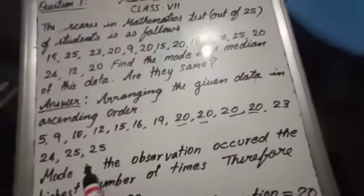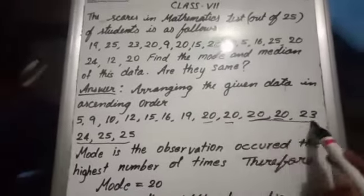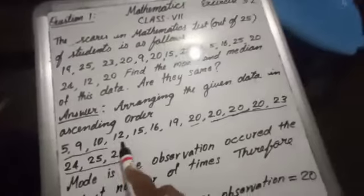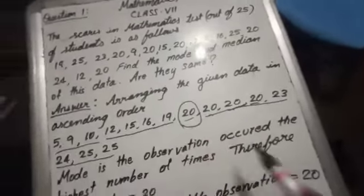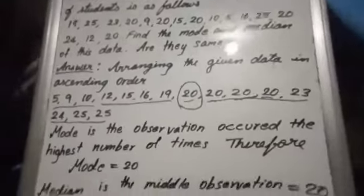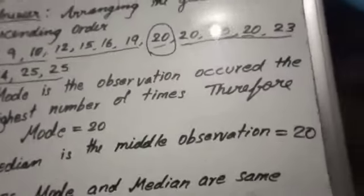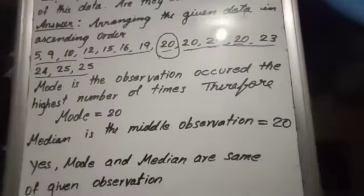So you can see 7 digits on this side, 7 on that side. Who is the middle one here? 20 is the middle one. So median is also 20. At the end, they ask the question are they same? So let us conclude the answer.